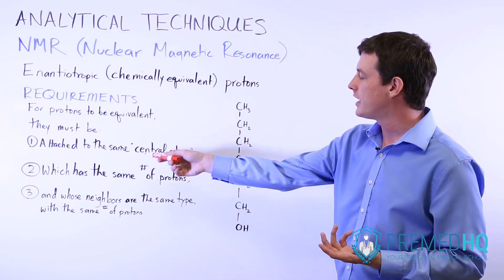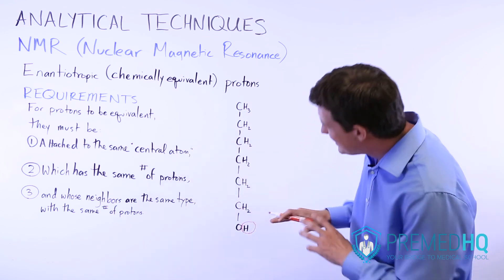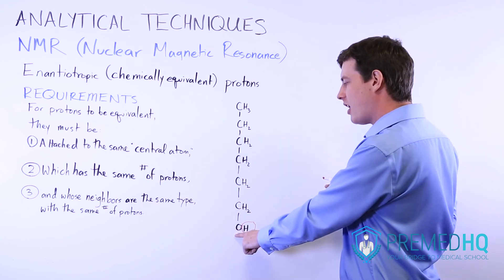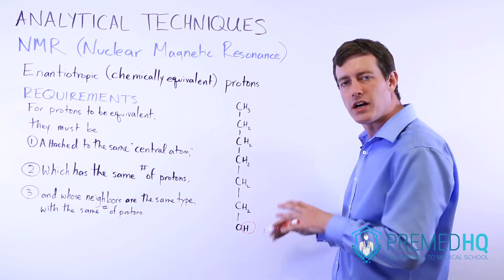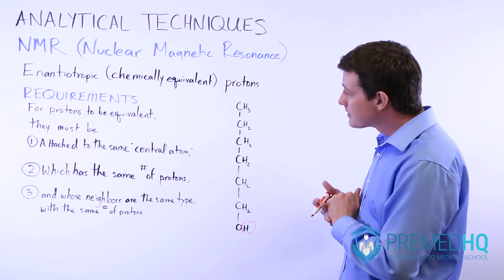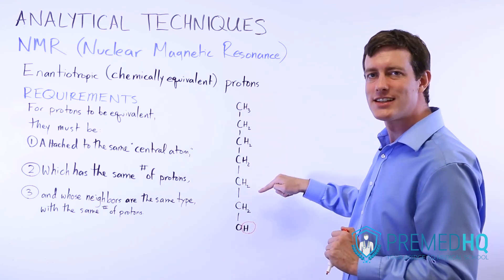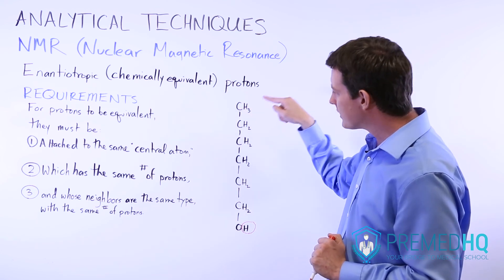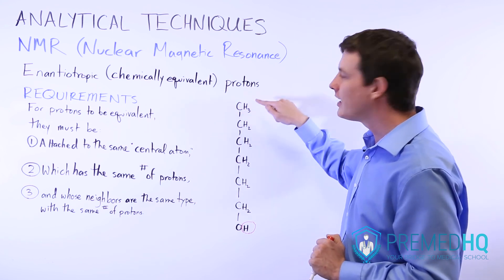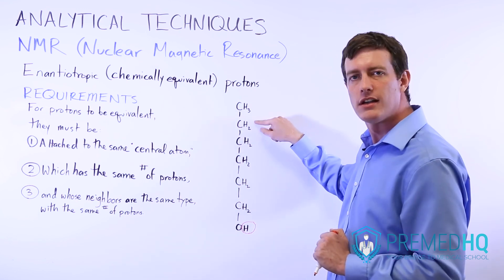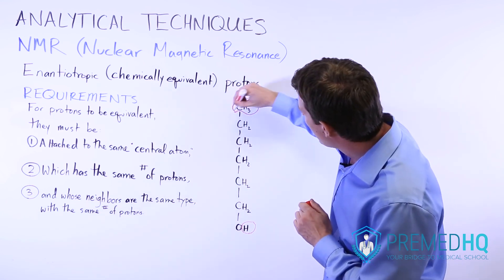Six carbons means hexane will be the first part of the name, and OH means it's an alcohol ending in -ol, so this is hexanol — or 1-hexanol — because the alcohol group is attached to carbon number one rather than in the middle of the chain. Let's look at the number of unique proton environments to understand the NMR plot this will produce. First, the hydrogen attached to oxygen is immediately ruled out from being equivalent to anything else, since no other hydrogen in this molecule is attached to oxygen. So this one will occupy its own proton environment.